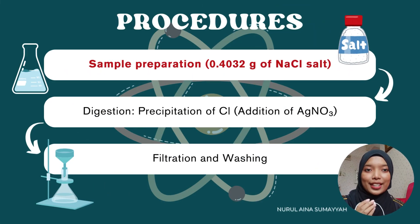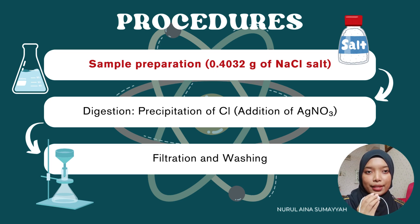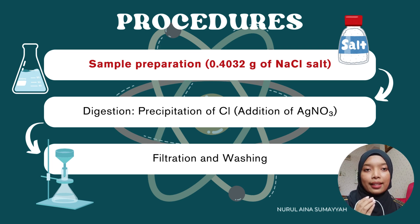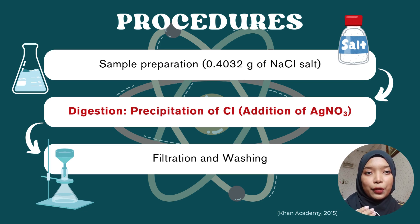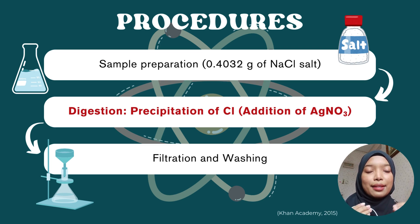The procedure of this analysis involves 6 steps. The first step is sample preparation, where 0.4032 grams of sodium chloride salt are diluted with 100 ml of distilled water. Then AgNO3, silver nitrate, is added into the diluted sample to form a precipitate of AgCl, silver chloride, which is white in colour.